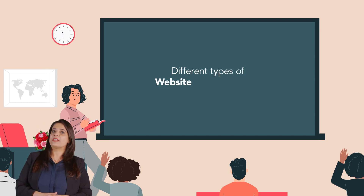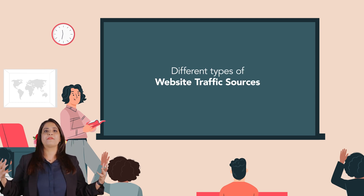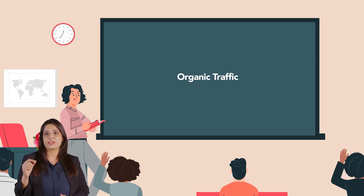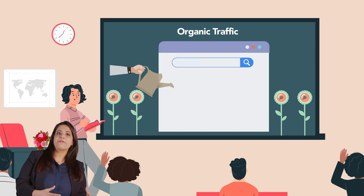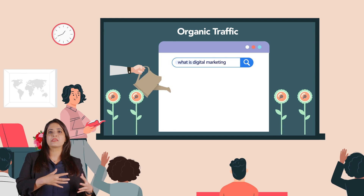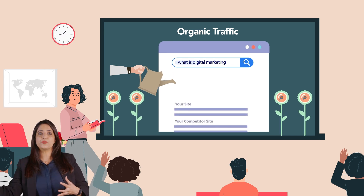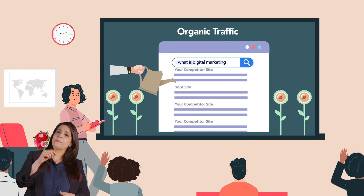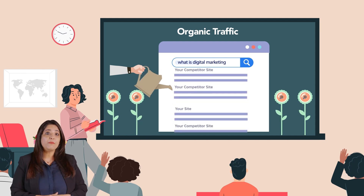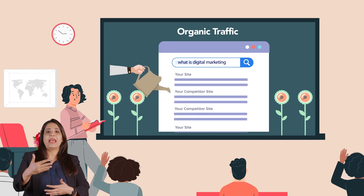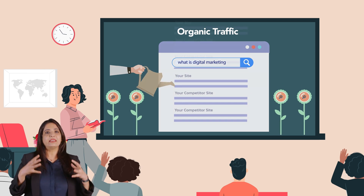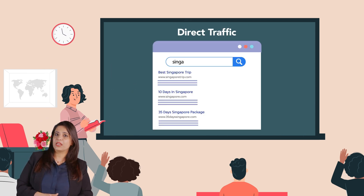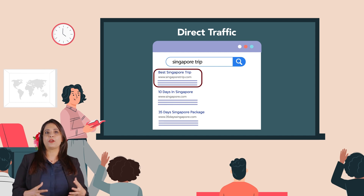Let us look at the different types of website traffic sources. First, we have organic traffic. Traffic that comes to your site from someone who found it through a search engine is organic. The fundamental goal of inbound marketing is to enhance organic website traffic.